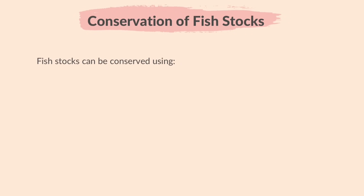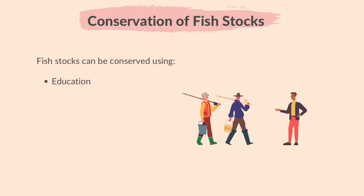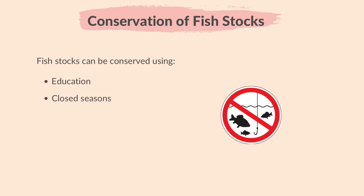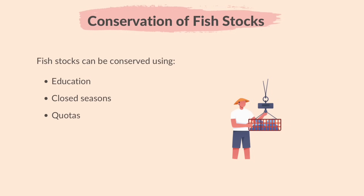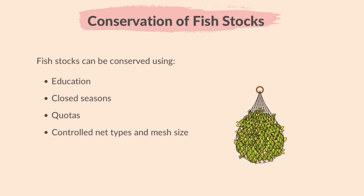Fish stocks can be conserved using education — teaching people not to catch too many fish and why it's important. Closed seasons — deciding times when fishing is off limits so fish can grow and reproduce. Quotas — figuring out how many fish can be caught so there's always enough left. Controlled net types and mesh size — using fishing gear that lets small fish escape and catches only what's needed.